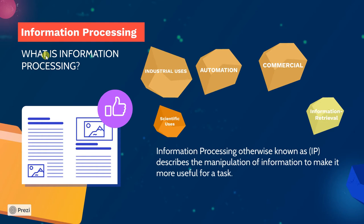Information processing, otherwise known as IP, describes the manipulation of information to make it more useful for a task. That's one of the main — if not the main — reasons for computers to exist. They exist mainly to help humans complete tasks in a more efficient and easy manner. We'll be looking at some of the major uses of computers in our society and within specific industries.